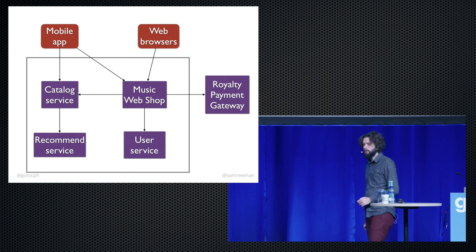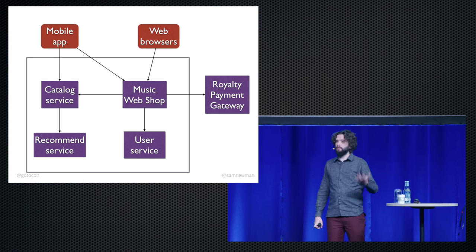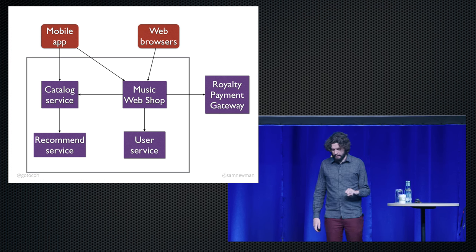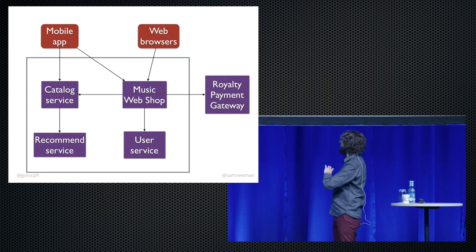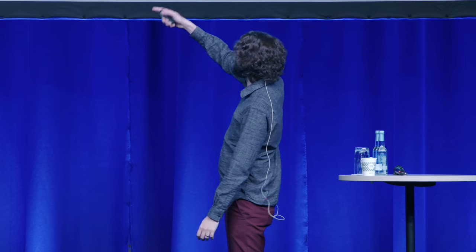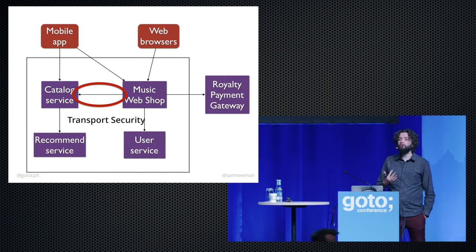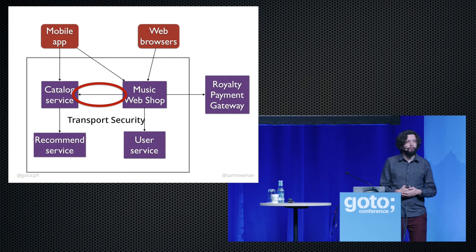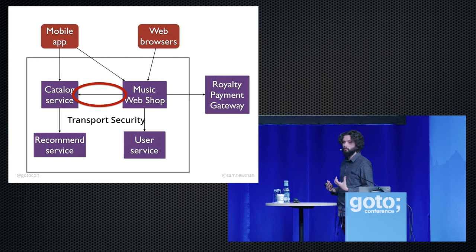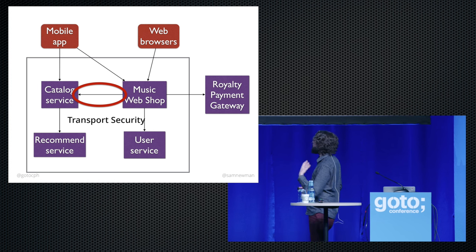Let's think about an example microservice system. I often use the faked domain of a music web shop. We have a bunch of services inside a perimeter. We start looking at this and thinking about how people could gain access to our stuff. Straight away we start thinking about transport security — we've taken what used to be in-method calls and now they're network calls. Those things are potentially much more vulnerable.